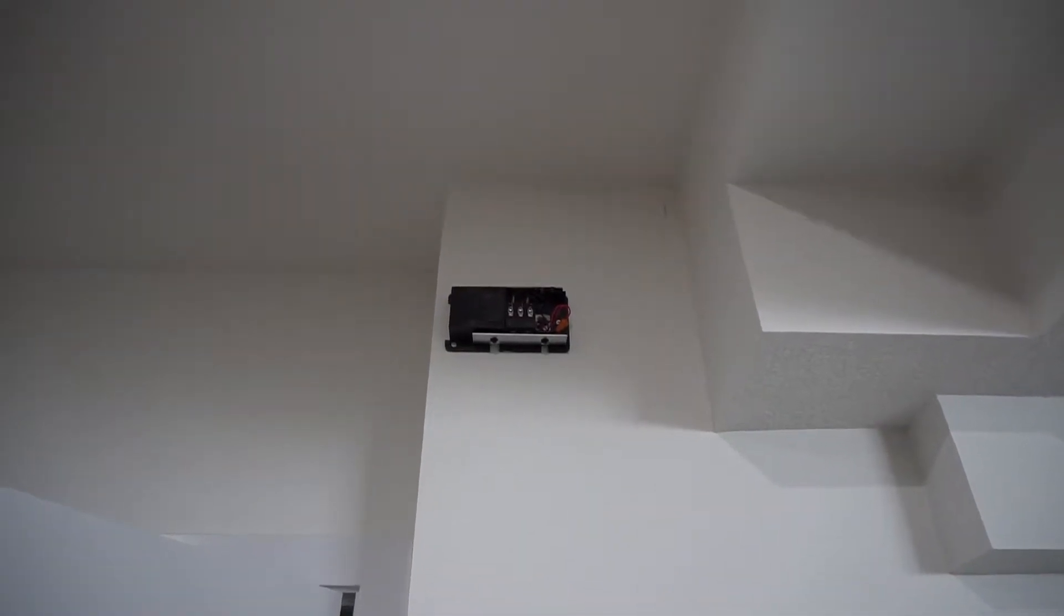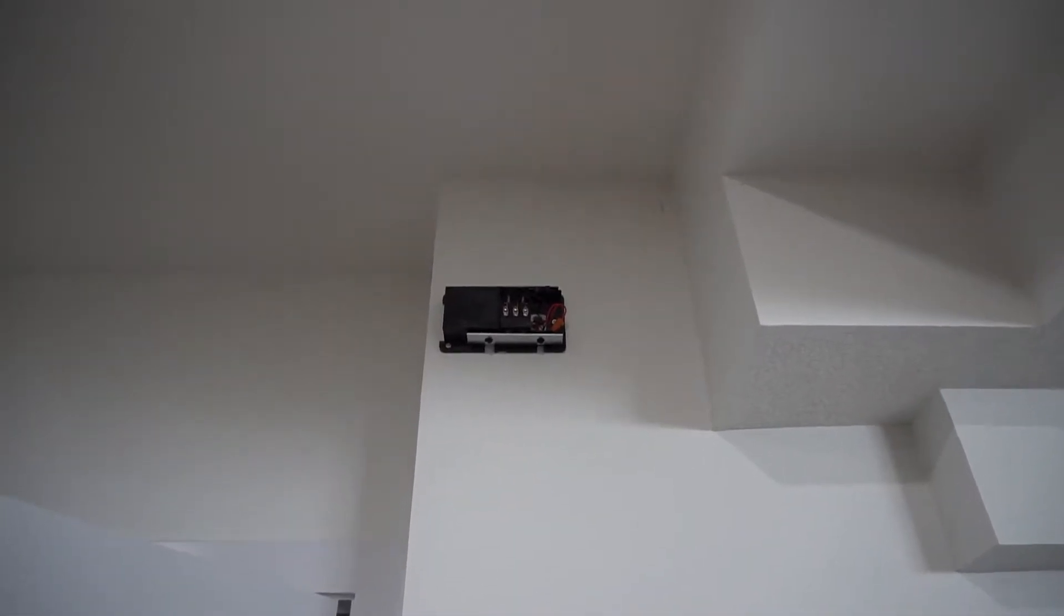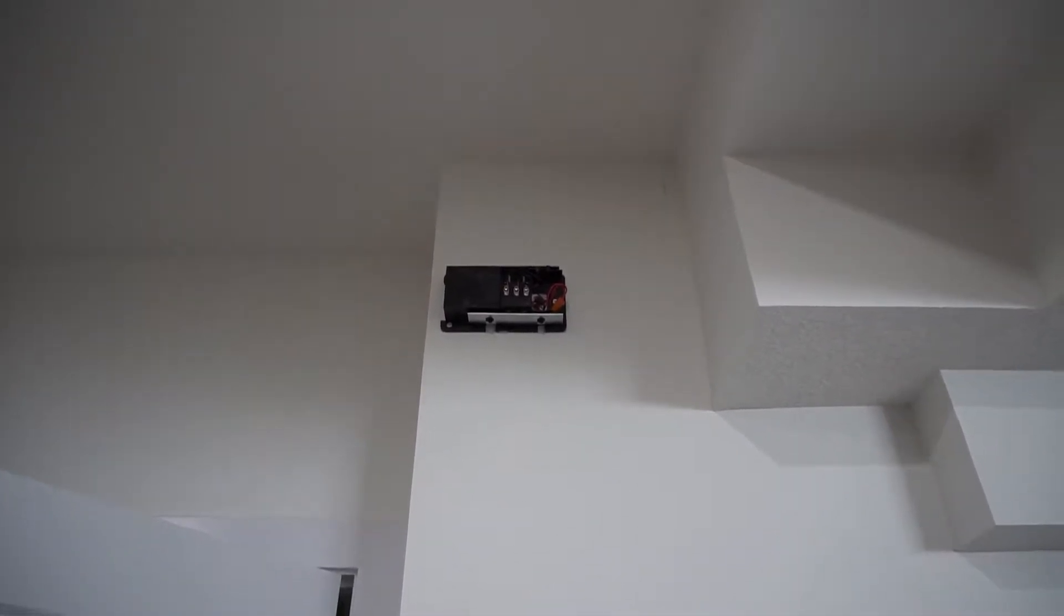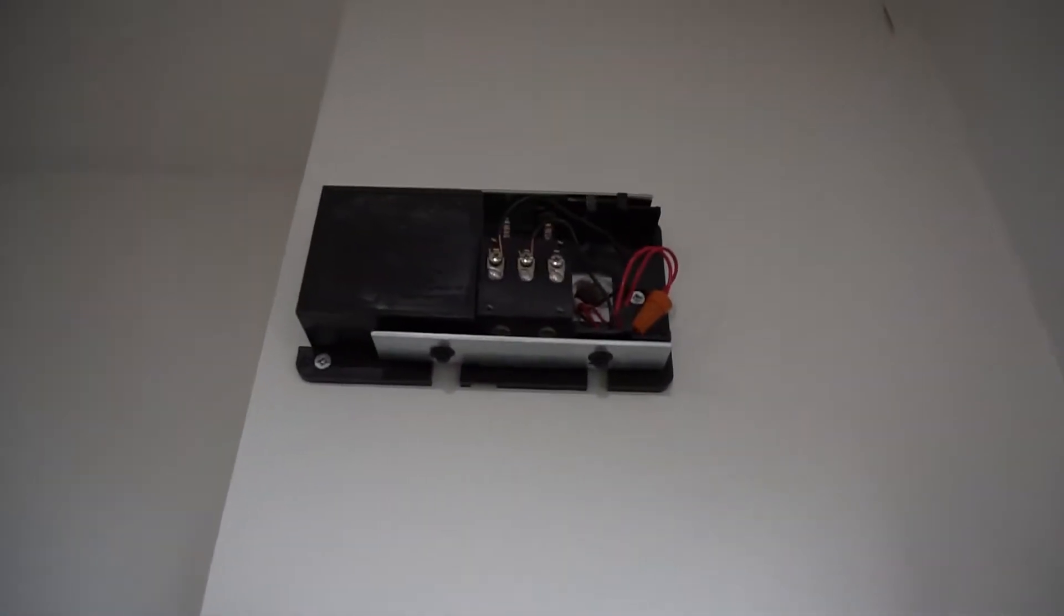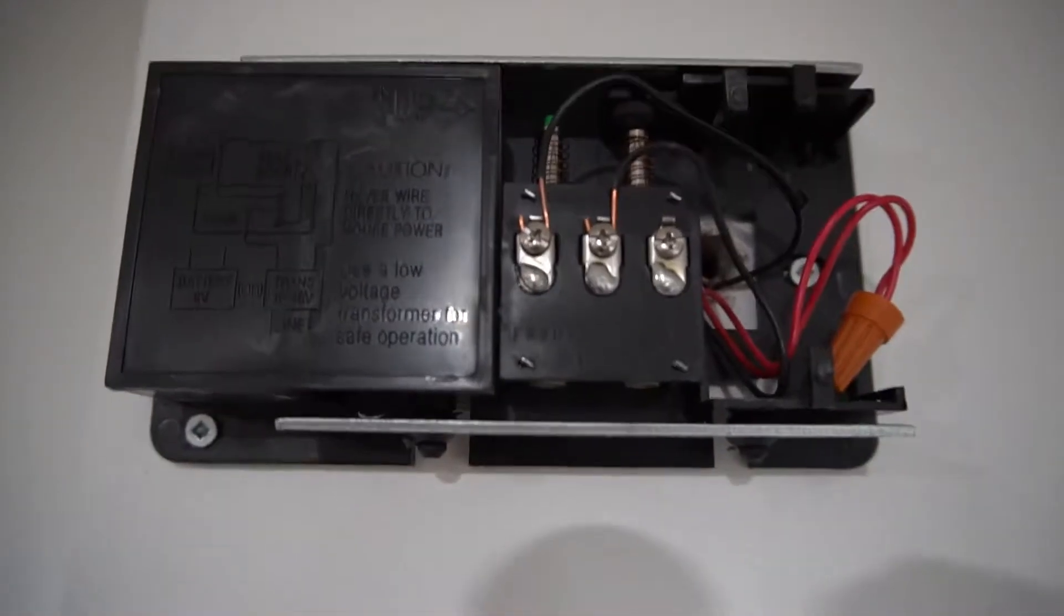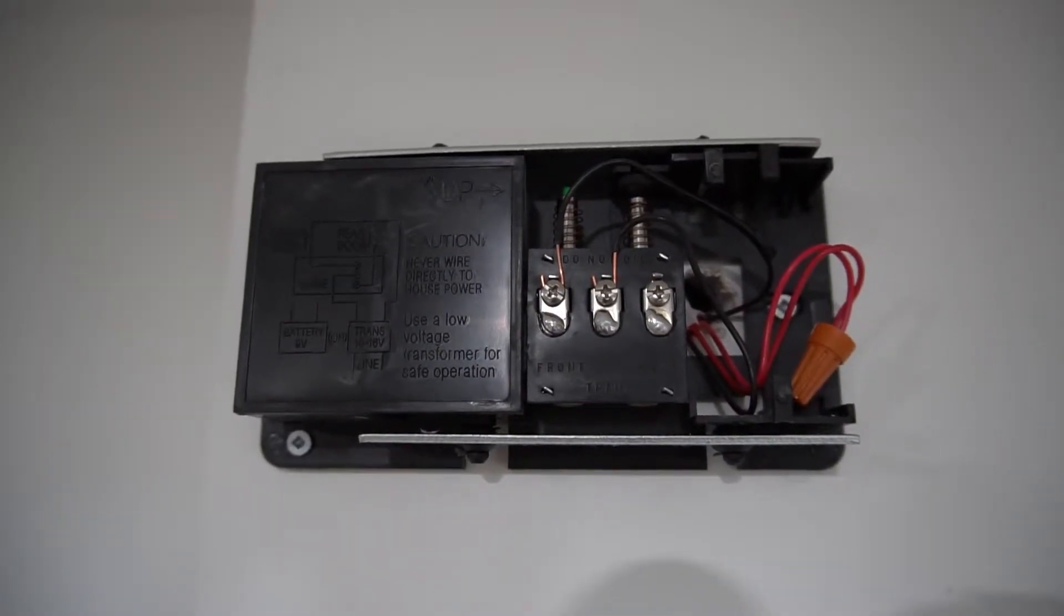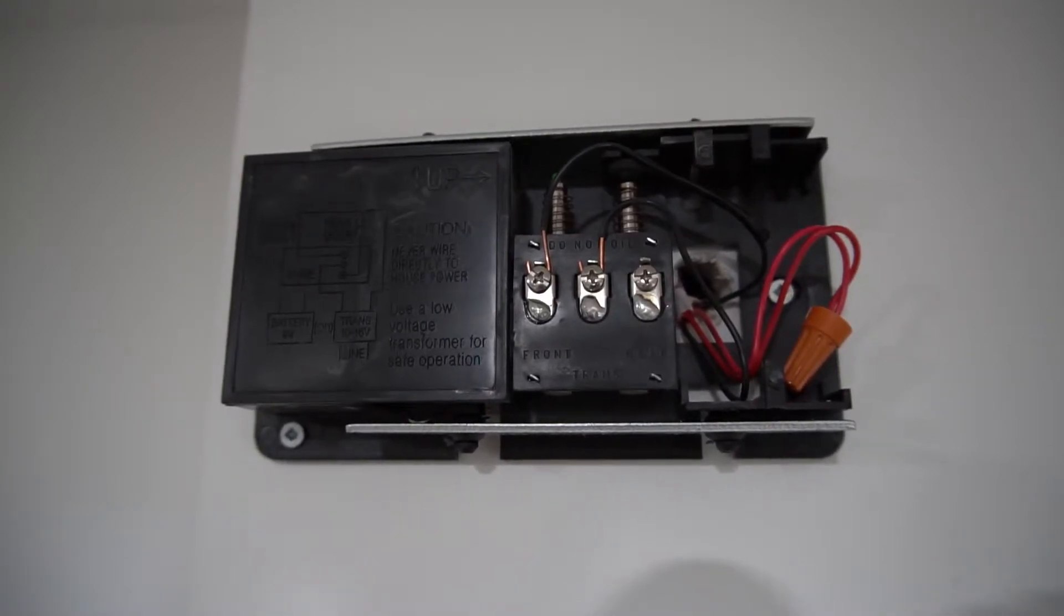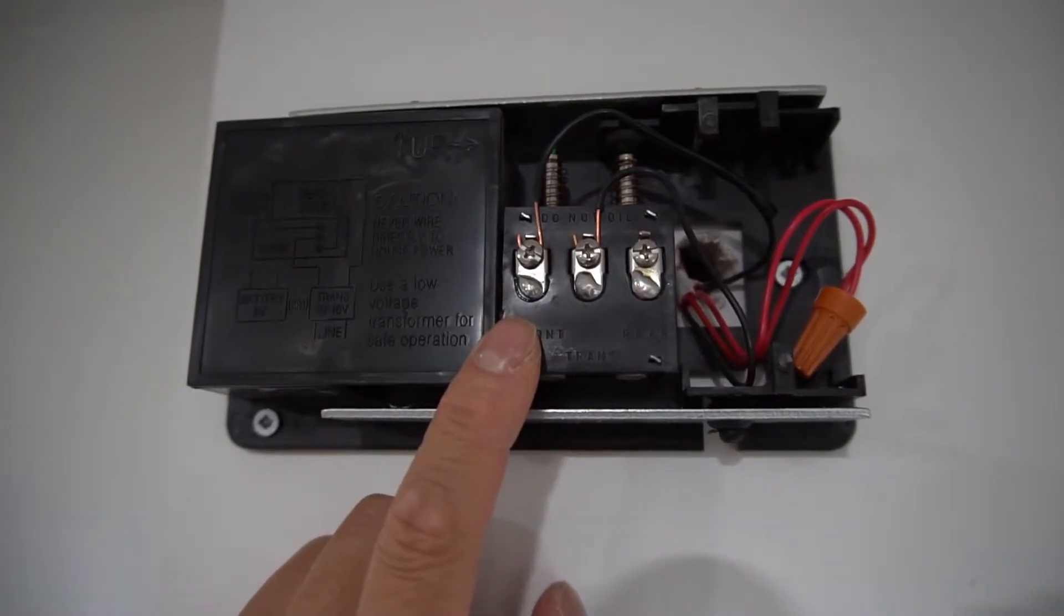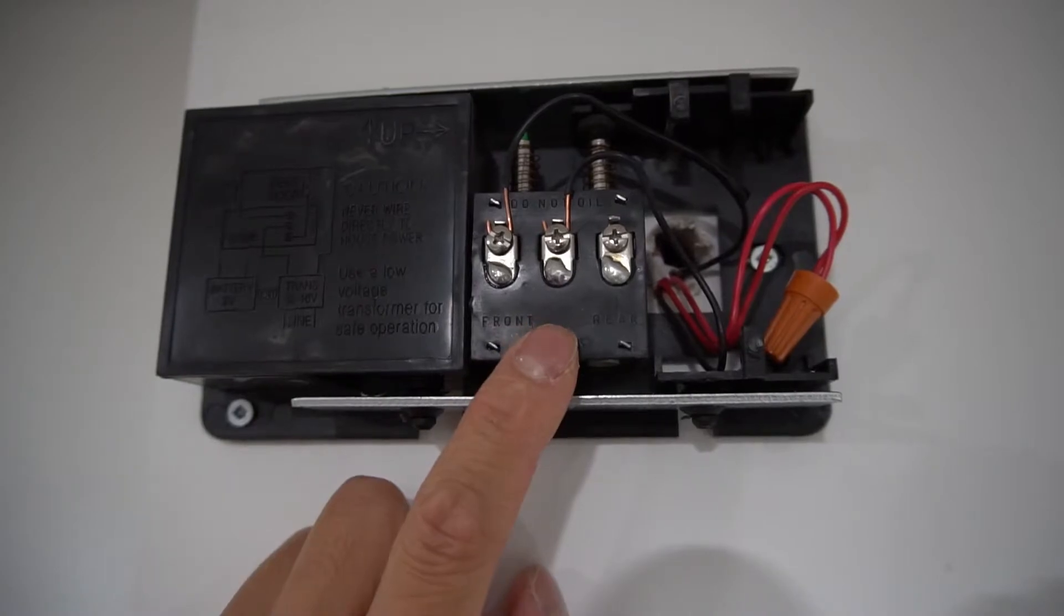Now for the next part. After you have installed your chime to the desired location, we will need to learn how to wire the chime. At the chime, you will need two 18-2 wires coming to this location. One for the front doorbell and the other one will be the transformer.